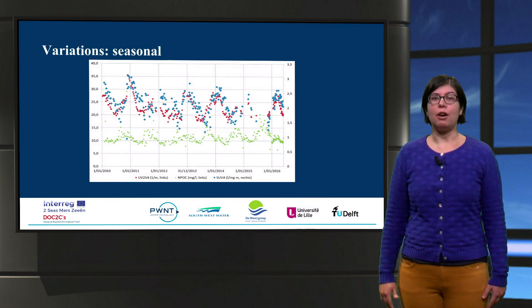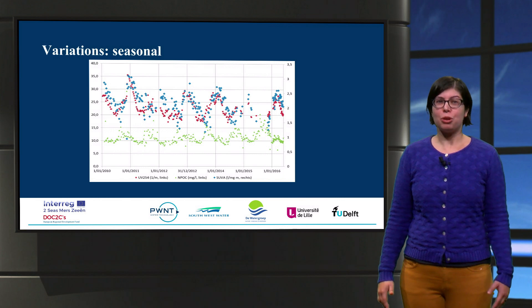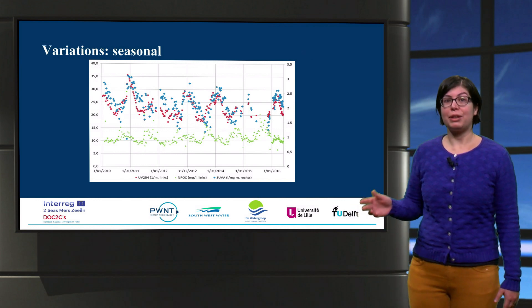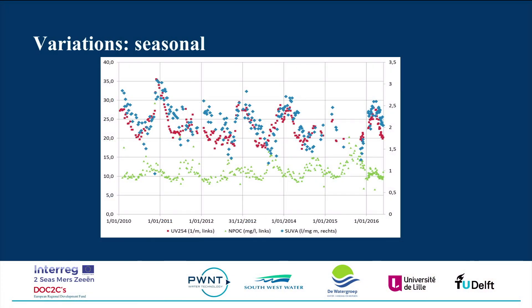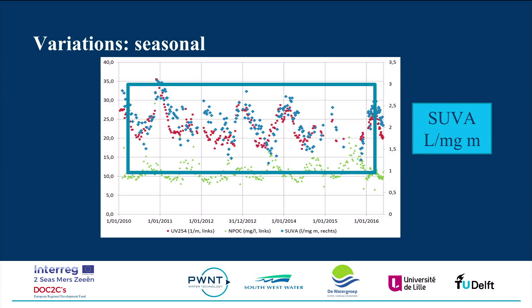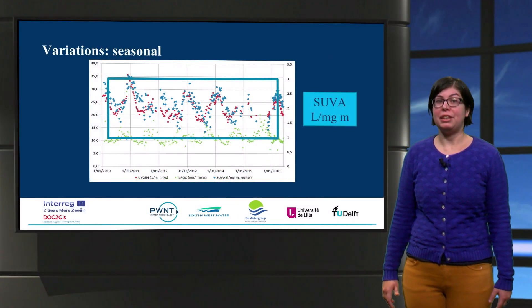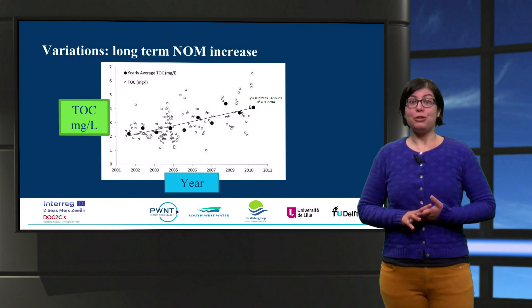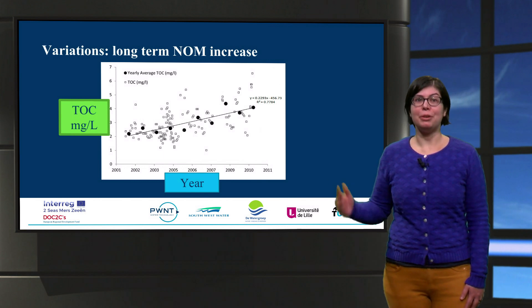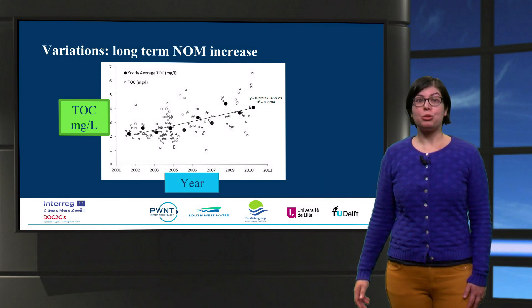Another issue is the variability of NOM in the water sources, which also creates challenges in how we remove NOM from water. In the graph of this example, the horizontal axis gives the time and the vertical axis gives the measured NOM parameters. If we look at the concentration of dissolved organic carbon, here in mg per liter, we see that there are seasonal peaks. Not only the concentration but also the character of the NOM may change seasonally, as illustrated by the variation of the SUVA value. In Northern European sites, variation in NOM has been observed on a broader time scale as well, with NOM concentration seeming to increase over the years.